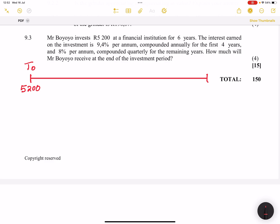They say the interest earned on the investment is 9.4% compounded annually for the first four years. So we've got T4. So that's for the first four years. It's T1, T2, T3. So we know that between this period, we are compounding at 9.4%.